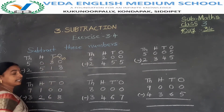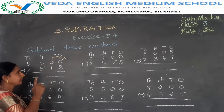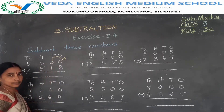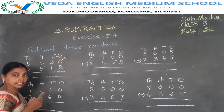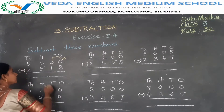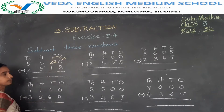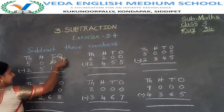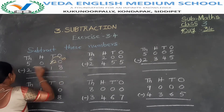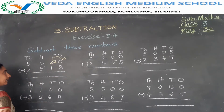First of all, there are 3 tens. Now 1 ten has gone to the ones place. Remaining tens: only 2 tens. So 3 is becoming 2. Now do the subtraction in the ones place: 10 minus 8.